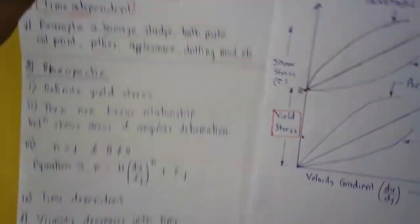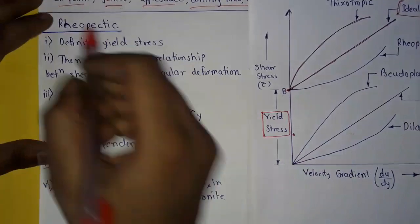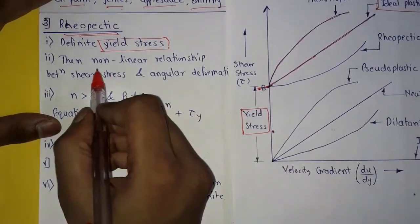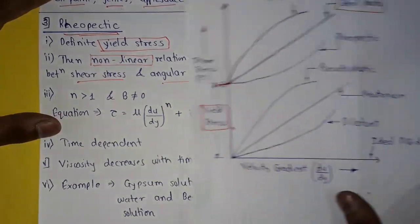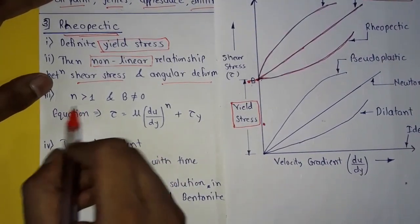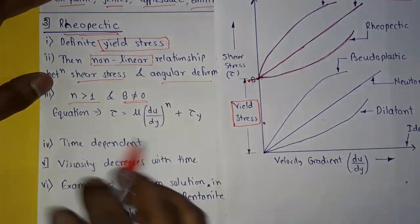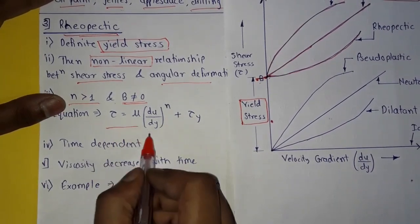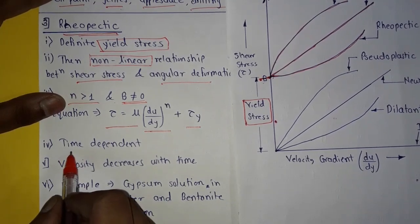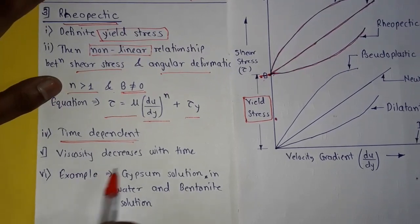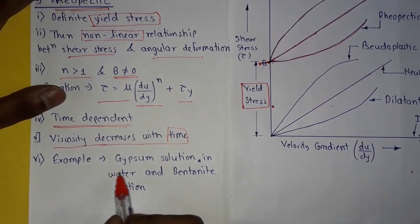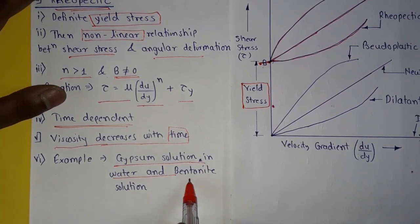Next is rheopectic fluid. It also has a definite yield stress, up to point b on the graph. Then it has a non-linear relationship between shear stress and angular deformation, so its curve is like this on the graph. Here, n is greater than 1 and b is not equal to 0, so the general equation becomes: tau equals mu times (du/dy)^n plus tau_y. It is also a time-dependent fluid and its viscosity decreases with time. Examples are gypsum solution in water and bentonite solution.